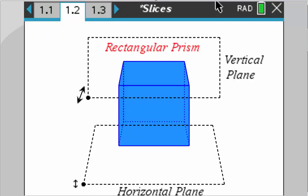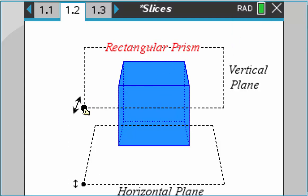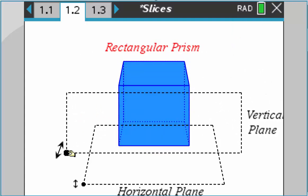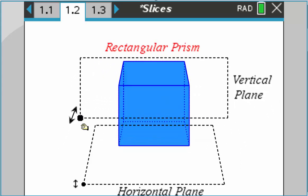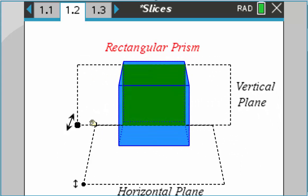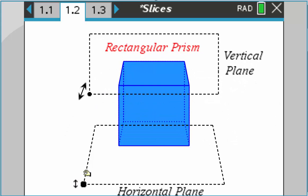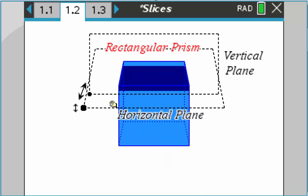So here we have a rectangular prism. We're going to grab a vertical plane and pull it through it. You can see that it's going to be a square or a rectangle depending upon what is there. And then the horizontal plane, grab this and pull it up and you can see it's whatever the base is.